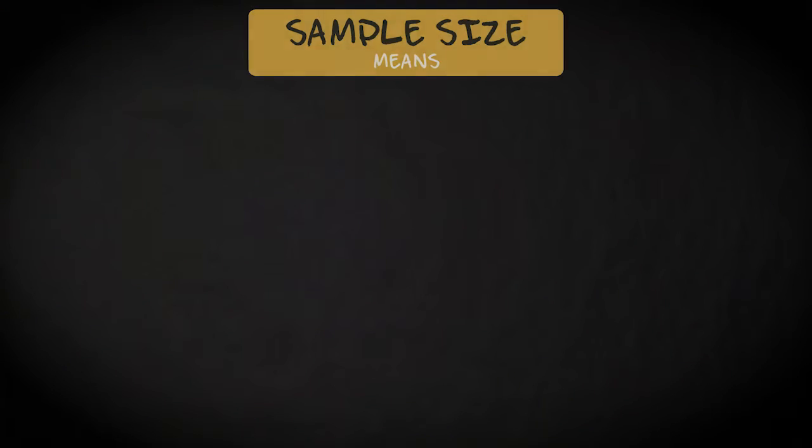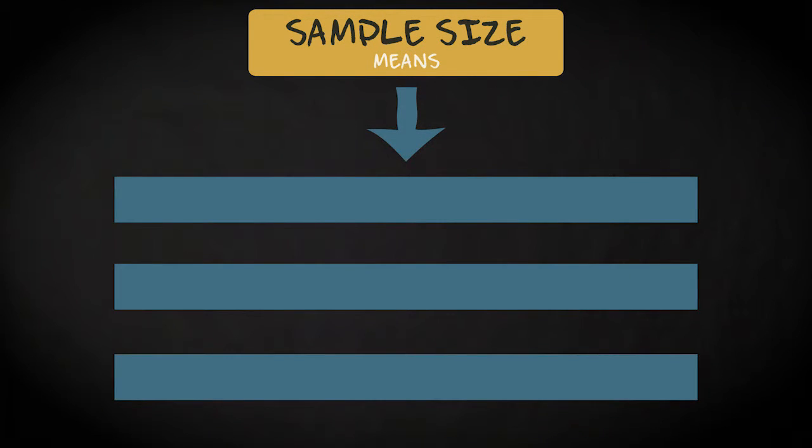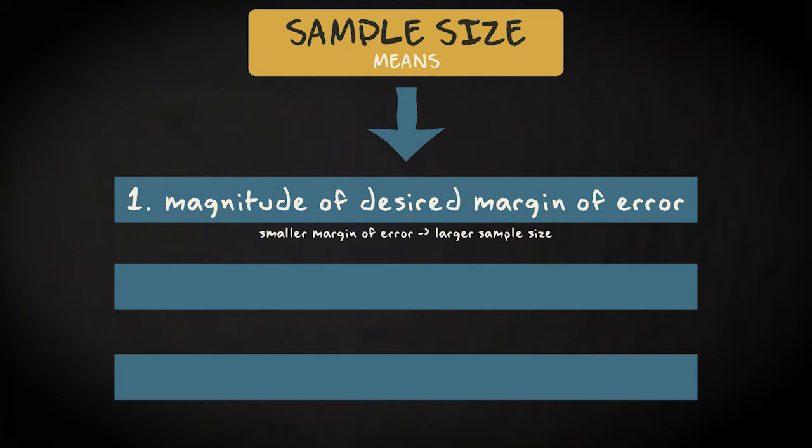Let me start with the sample size when it comes to means. The choice for your sample size depends on three main factors. The first one is how precise you would like to be. Remember that a confidence interval is computed by adding to and subtracting from a point estimate a certain margin of error. How large do you allow this margin to be? The smaller you want the margin of error to be, the larger your sample size should be.